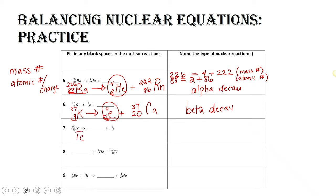Let's take a look at the next problem: technetium-99. We have a beta particle on the product side. We need to balance both sides. Our mass number is 99 and we've got a 0, so our new mass number for our daughter nuclide is going to be 99. We've got 43 as our atomic number, and then a negative 1 on the product side. Negative 1 plus what gives me 43? It's 44. Looking on the periodic table, this is Ru, or ruthenium. And once again, we have beta decay.